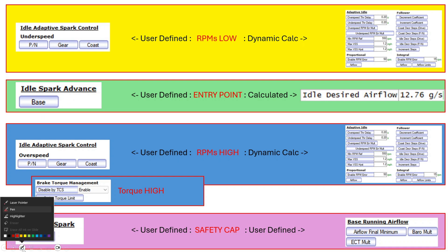So we're basically saying hey computer, use this base air that's your entry point, right? You want to idle, you need to use this amount of spark. If you go under or over you need to reference these adaptive spark tables to control the RPMs.